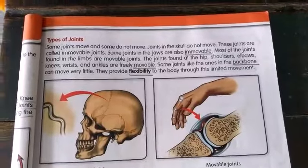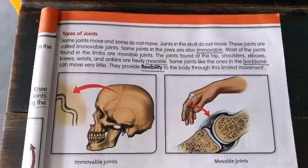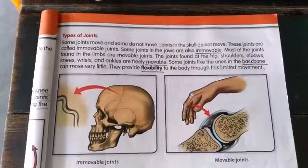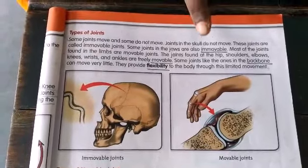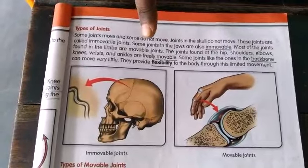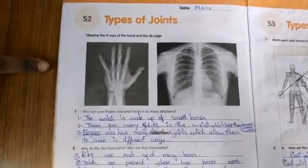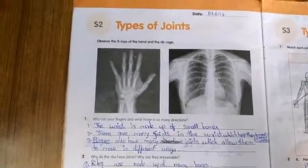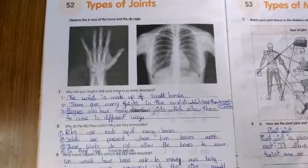Children, read the lesson and write the underlined words as hard words in your classwork. You are going to draw the pictures of immovable joints and movable joints — draw these figures in your classwork on the plain side. Open your workbook. You can see two X-ray pictures given there: an X-ray of the wrist part and the X-ray of the ribcage.